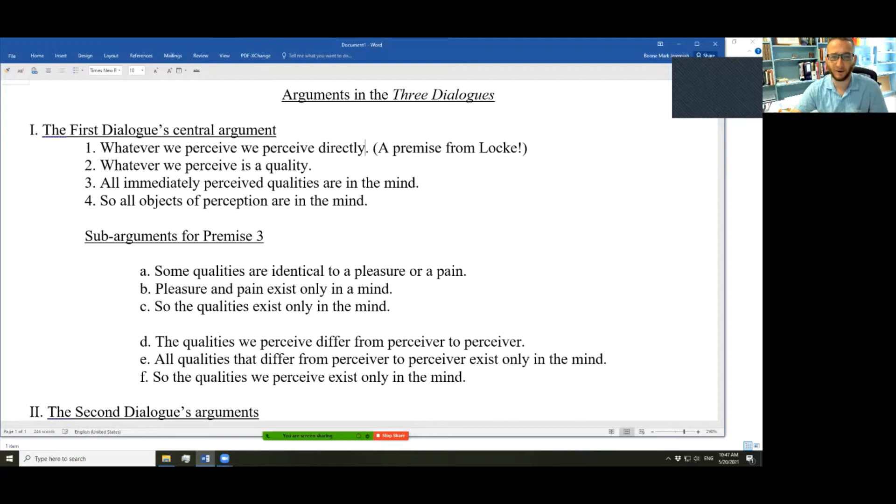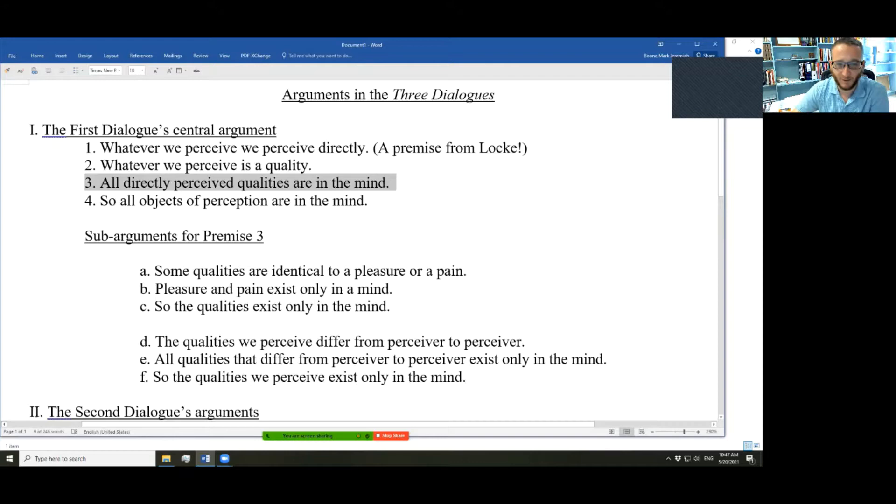Also whatever we perceive is a quality. And also, as it turns out, all qualities we perceive directly are in the mind. What follows from that? Everything we perceive is in the mind.